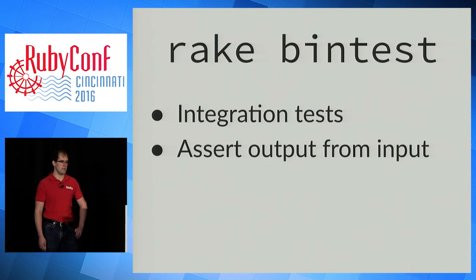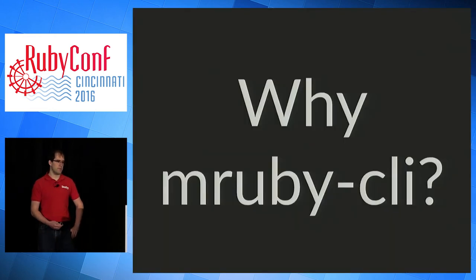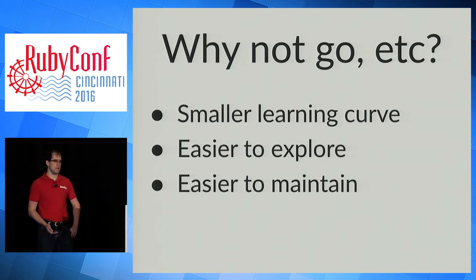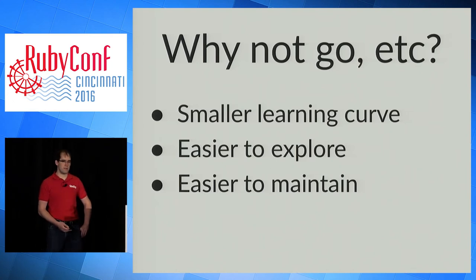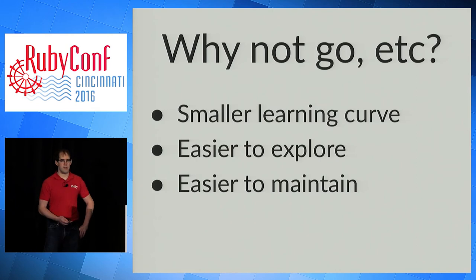MRuby CLI also supports bin tests, which are integration tests. Since I prefer strong unit tests, I haven't explored these much yet — for an integration test, you run your command, it captures the output, and you can assert what the output looks like. Despite all these difficulties, why would you choose to use MRuby CLI over Go or other tools with the same capability? I'm primarily a Rubyist and I work with a team of Rubyists. MRuby keeps us in our comfort zone — when I had problems with test setup, I could use CRuby to get the job done. By limiting the number of things I need to learn at once, my stress level is lower and my ability to deliver is higher.